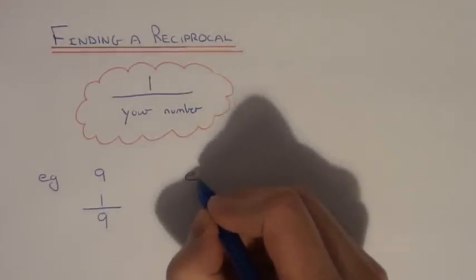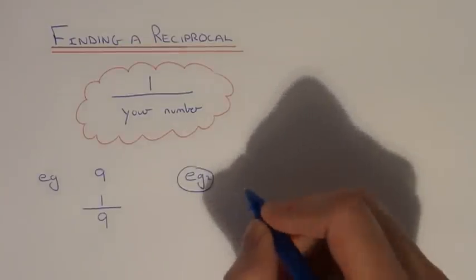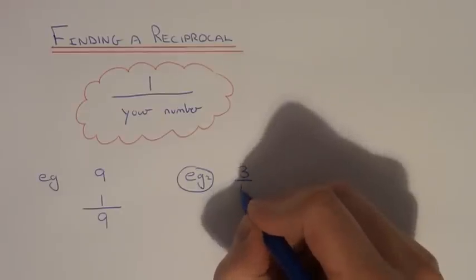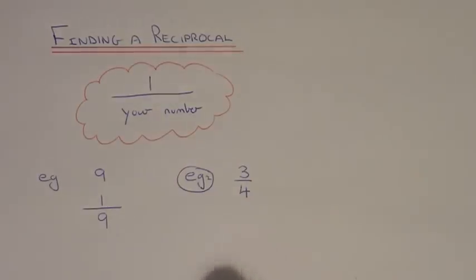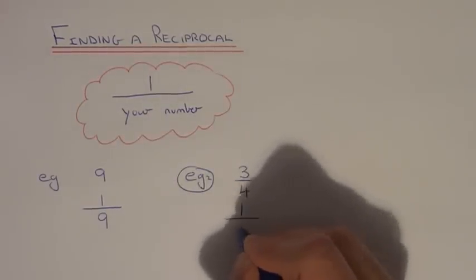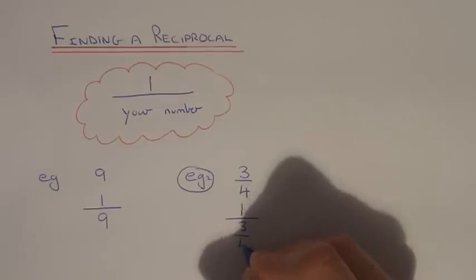Let's take a look at another example. So work out the reciprocal of 3 quarters. So again all we need to do is do 1 divided by 3 quarters.